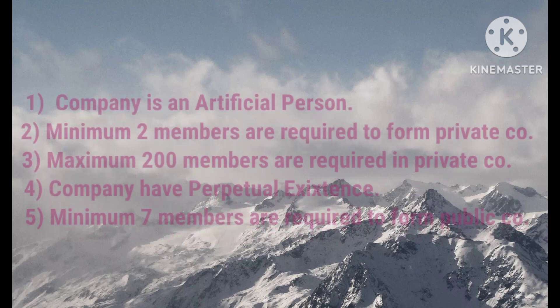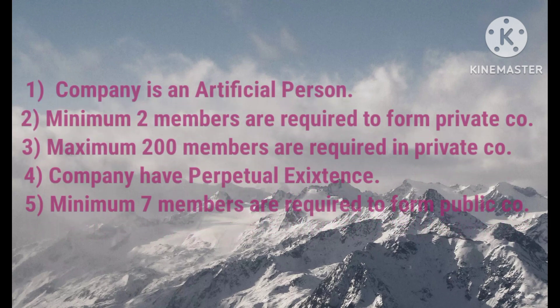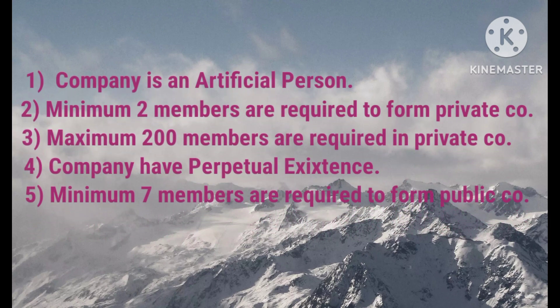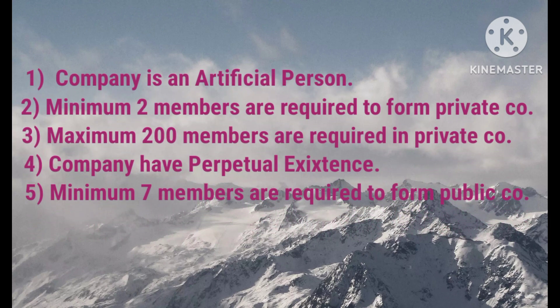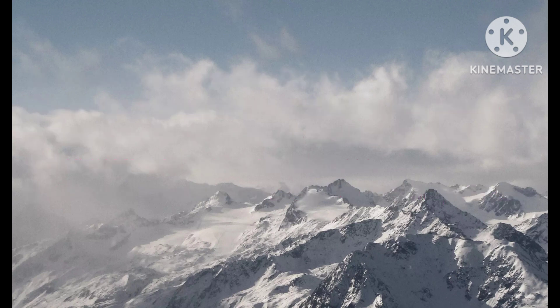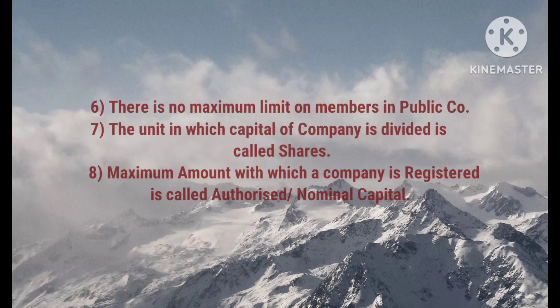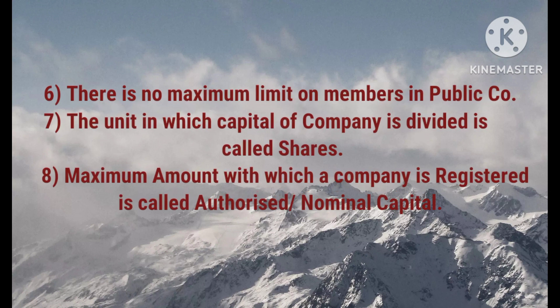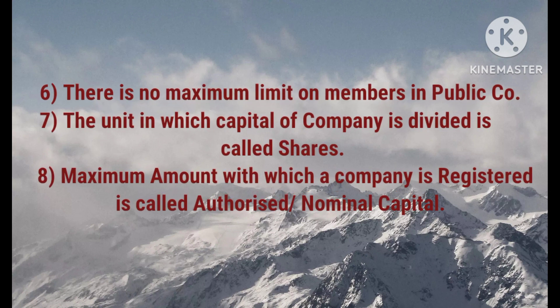A company is an artificial person. Minimum 2 members are required to form a private company, and maximum 200 members are allowed in a private company. A company has perpetual existence. Minimum 7 members are required to form a public company, and there is no maximum limit on members in a public company.